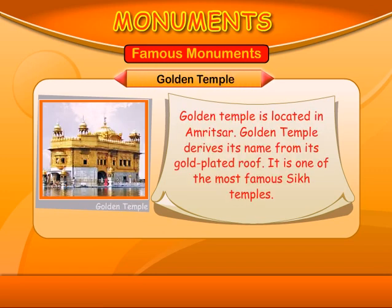Golden Temple. Golden Temple is located in Amritsar. Golden Temple derives its name from its gold-plated roof. It is one of the most famous Sikh temples.